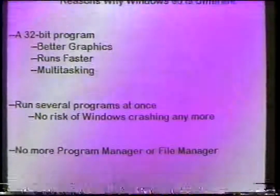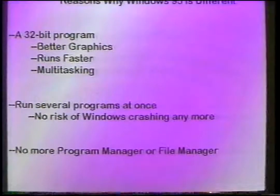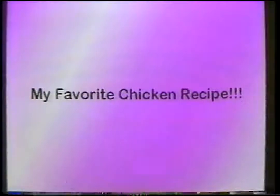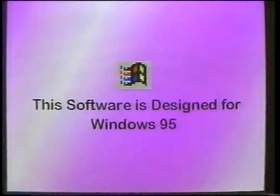Windows 95 doesn't use a program manager or file manager — now those programs are combined in one area called My Computer. Remember how difficult it was in early versions of Windows to come up with a creative eight-letter file name? Well, no more of that. Now you can have a file name up to 255 characters in length and you can use spaces and punctuation. But you can only do this if you have software designed with the Windows 95 logo; otherwise you must still use the eight-letter file name plus the three-letter extension.